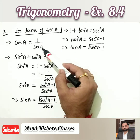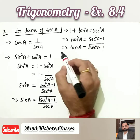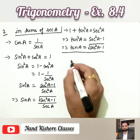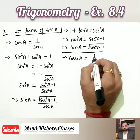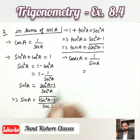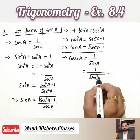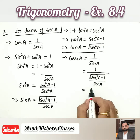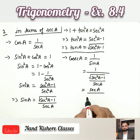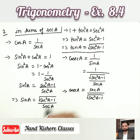We have now expressed cos A, sin A, and tan A in terms of sec A. For cosec A, we know cosec A = 1/sin A. Substituting the value of sin A: cosec A = sec A/√(sec²A − 1), since the secant in the numerator moves to the top.